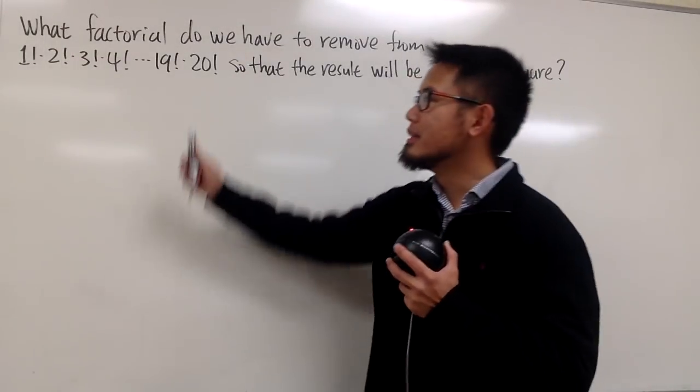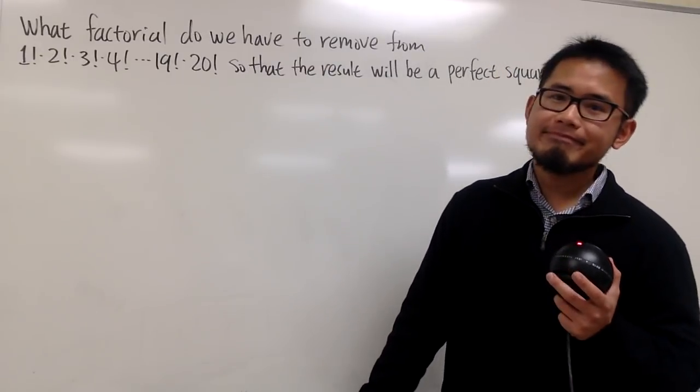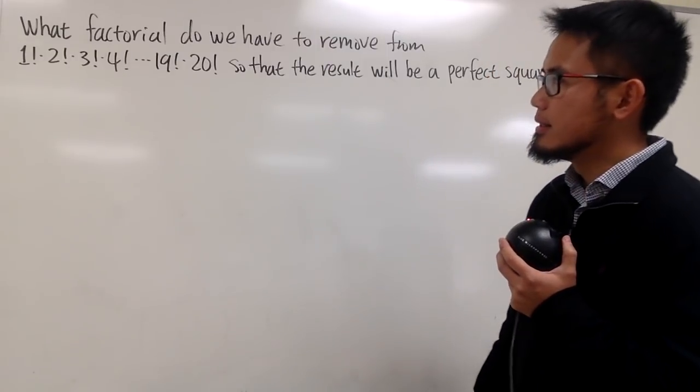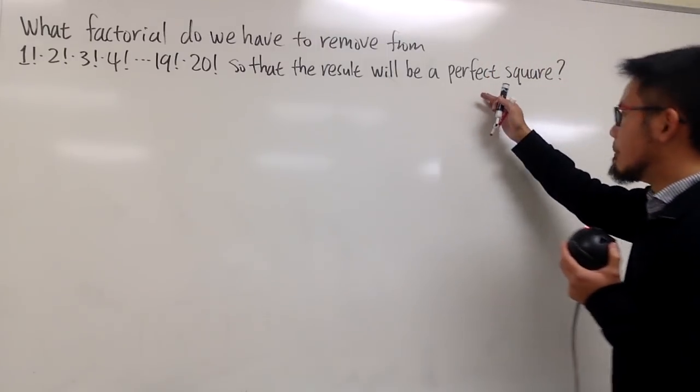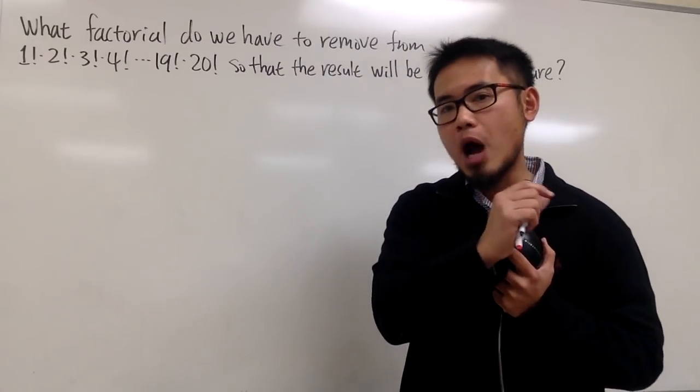Okay, as you know, this is going to be a huge number. So we have to be smart. Let's see. In order for a number to be a perfect square, we have to have something to the even number power, right?